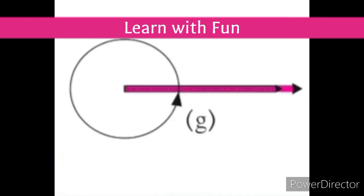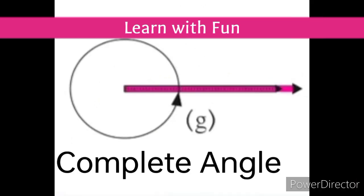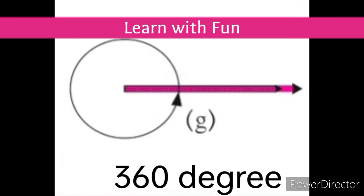The next type is complete angle. An angle whose measure is 360 degrees is called a complete angle. Here, the arm completes one full round and comes back to its original position. So here too, the two arms of the angle coincide with each other, as in zero angle. It is a full circle — a complete angle.